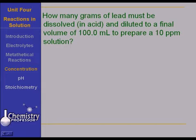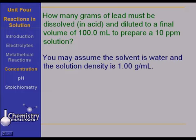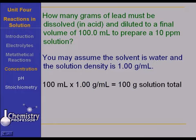Here's a problem. How many grams of lead must be dissolved in acid and diluted to a final volume of 100 milliliters to prepare a 10 parts per million solution? That's 10 parts per million lead. Assume the solvent is water and therefore assume the density is 1 gram per milliliter. You take 100 milliliters at a gram per milliliter is 100 grams of solution total.